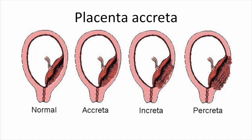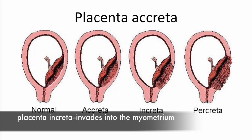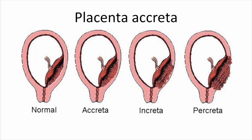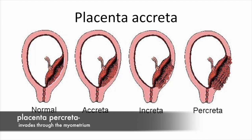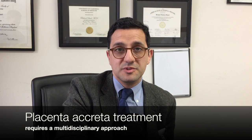A special cause of postpartum hemorrhage that has become more prevalent is placenta accreta. It occurs when the placenta does not separate from the uterus and has different grades: placenta accreta (abutted on the uterine surface), placenta increta (invading the myometrium), and placenta percreta (invading through the myometrium to the serosa or adjacent organs like the bladder). Treatment requires multidisciplinary coordination between maternal-fetal medicine, GYN oncologists, interventional radiology, and neonatologists.